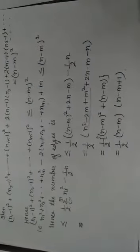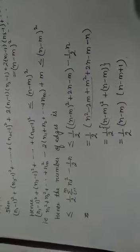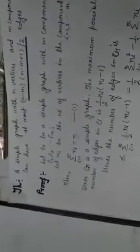So we have discussed complete graph, connected graph, components, and the theorem that a simple graph with n vertices and m components can have at most (n−m)(n−m+1)/2 edges. Thank you.